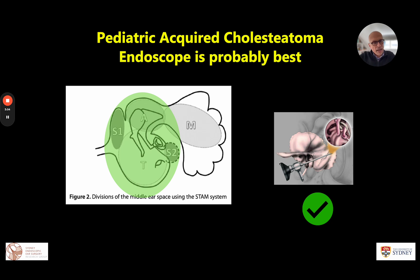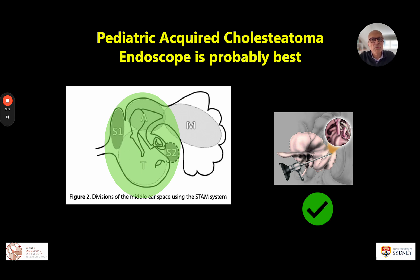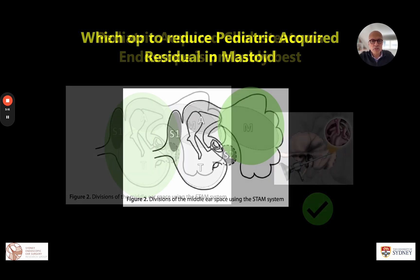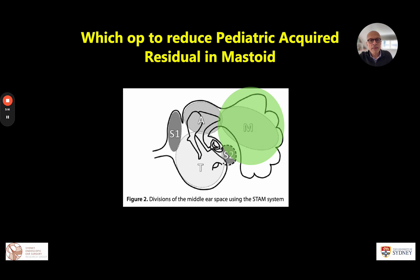Aggregating all of this data, it seems that for middle ear and attic disease in the child, the endoscope is probably the best option relative to microscopic techniques to reduce residual rates.